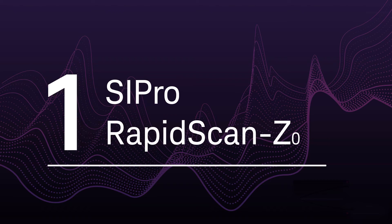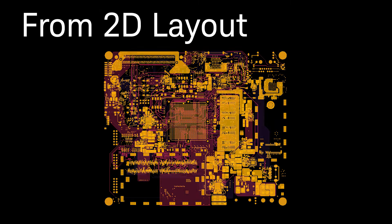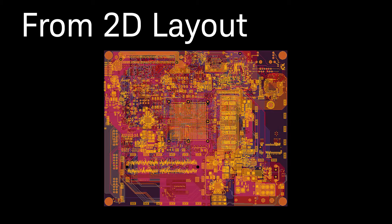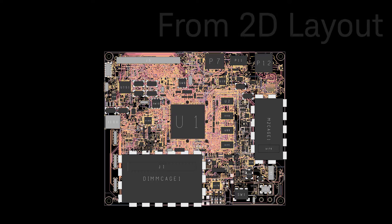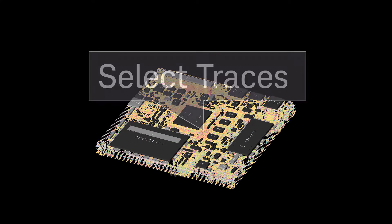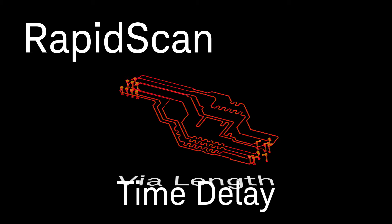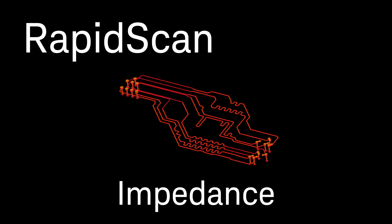Number one: SI Pro Rapid Scan Z0. SI Pro takes your 2D layout and substrate information to create a 3D view. After you select the traces you want to analyze, you can rapid scan them to find out the via length, trace length, and impedance.